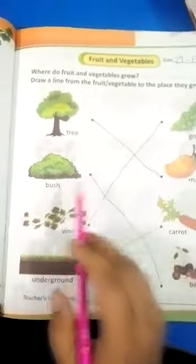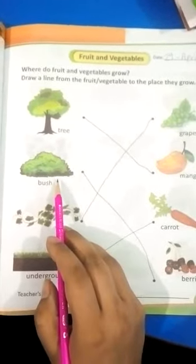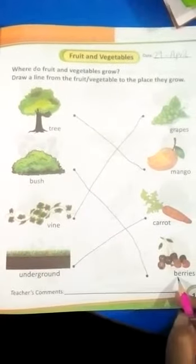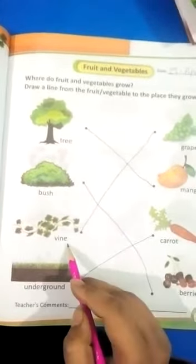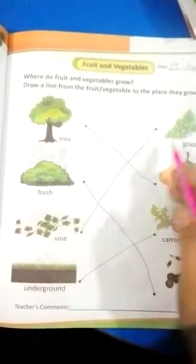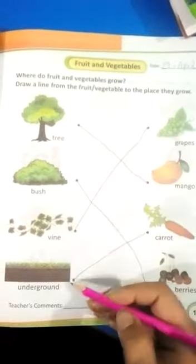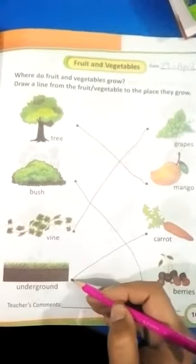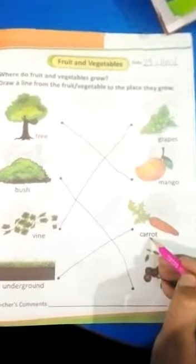Mangoes. Bushes — Jhaadi. Jhaadi کے اوپر کیا لگتے ہیں? Berries. Vine — Bail کے اوپر کیا لگتے ہیں? Grapes — Anggur. Underground. ہم لوگ کیا لگتے ہیں? Carrot.